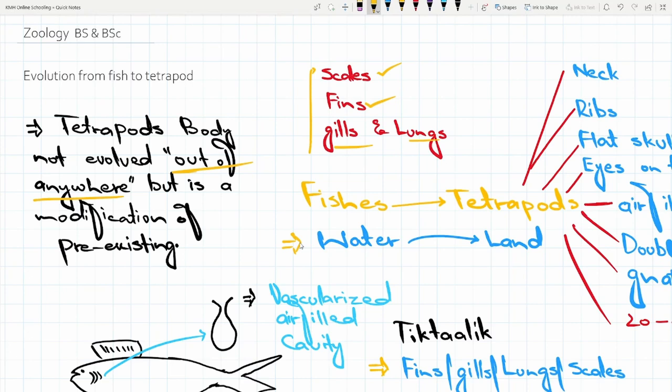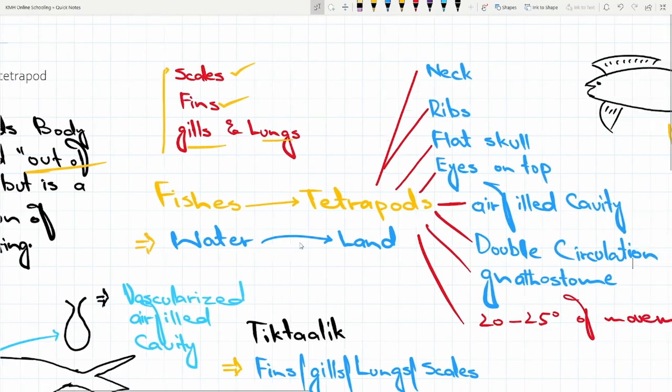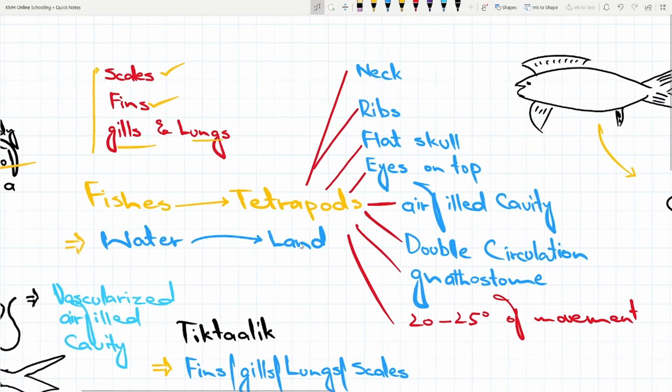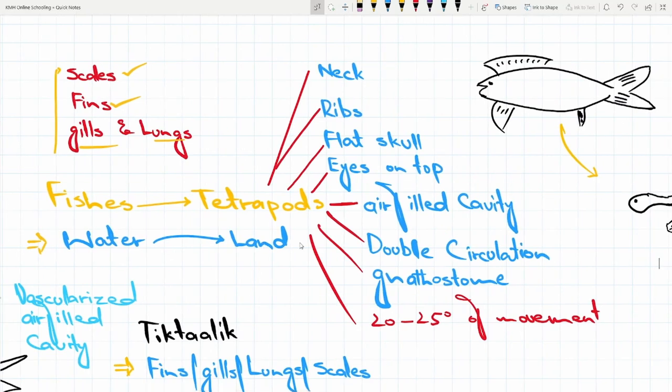In the vertebrates, this one is the initial modification. Now, the fishes changed into the tetrapods. Now, in the tetrapods, the fishes have the scales, fins, gills and lungs. And after that, the tetrapods revealed that there were some qualities that were distinguished and prominent from that of the fishes.